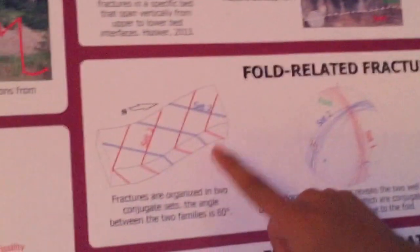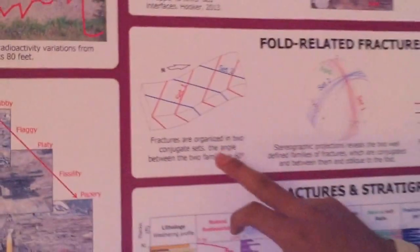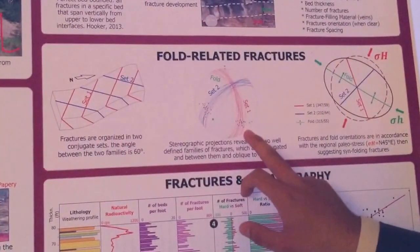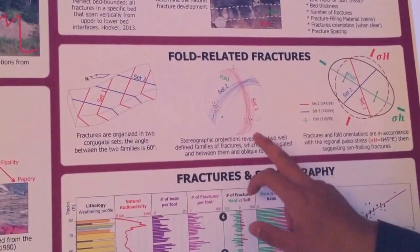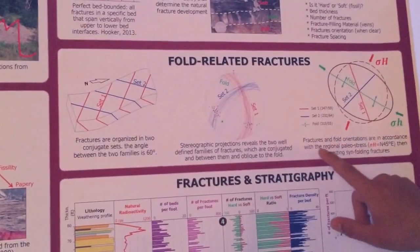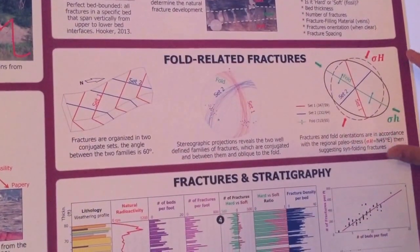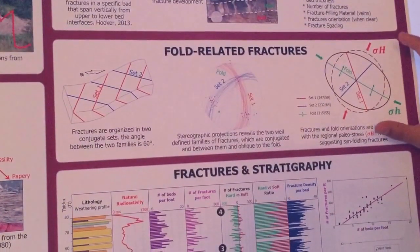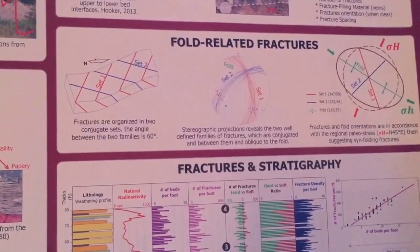These sets are oriented 60 degrees from each other, and then we plotted the fractures in a stereographic projection. Based on this stereographic projection, we made a stress ellipse and we determined the maximum horizontal stress, which is oriented north 45 degrees.